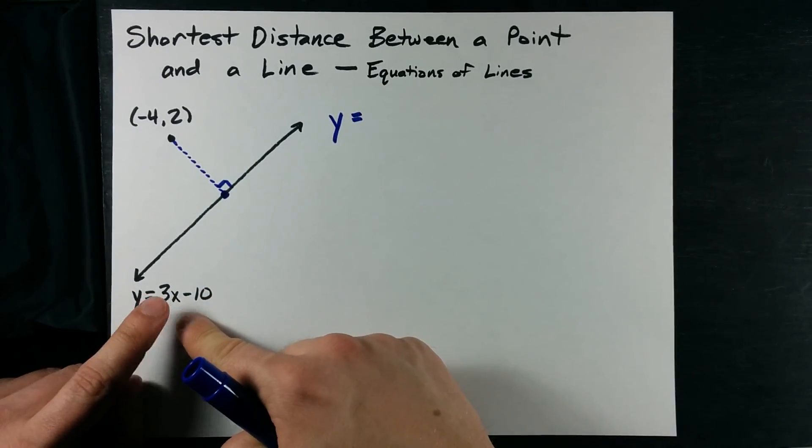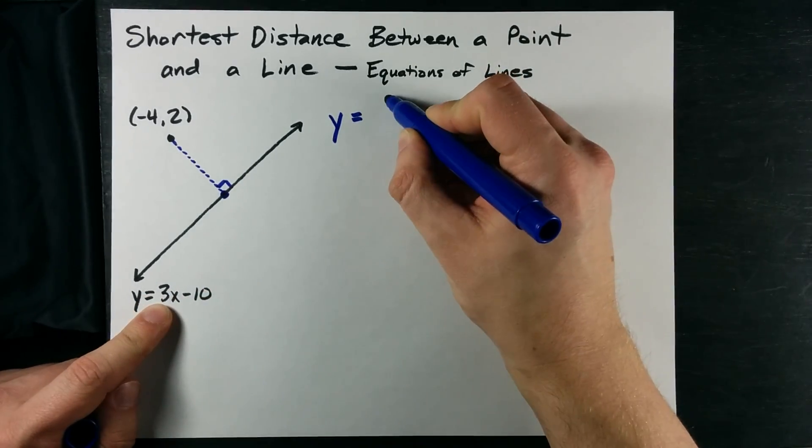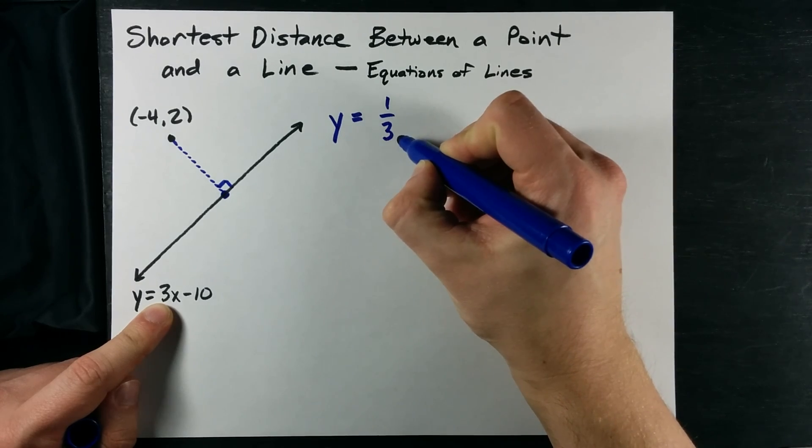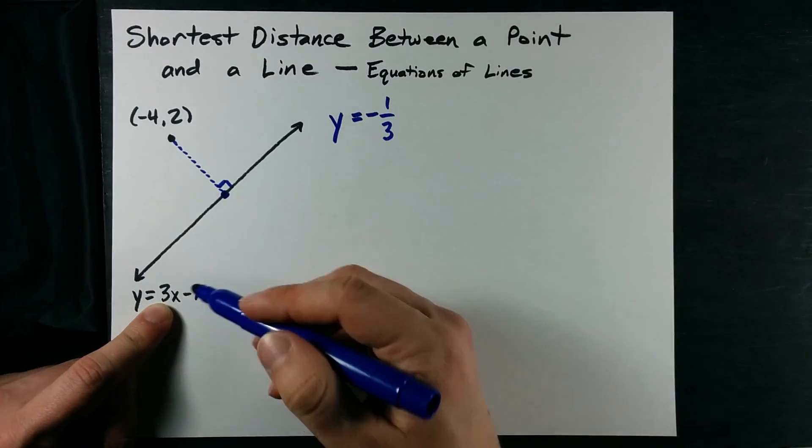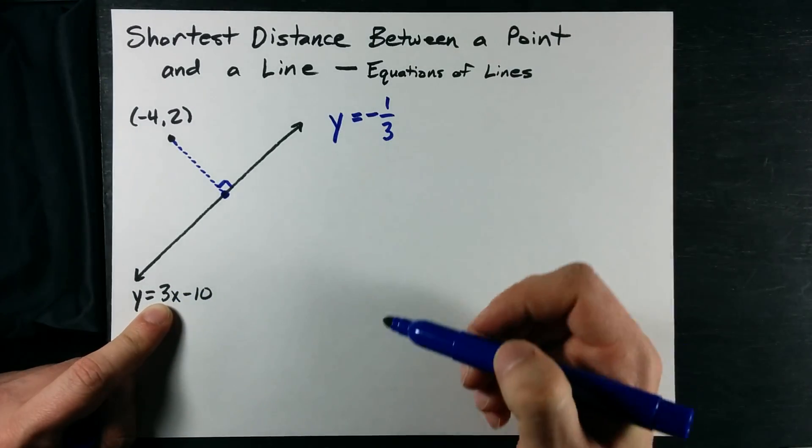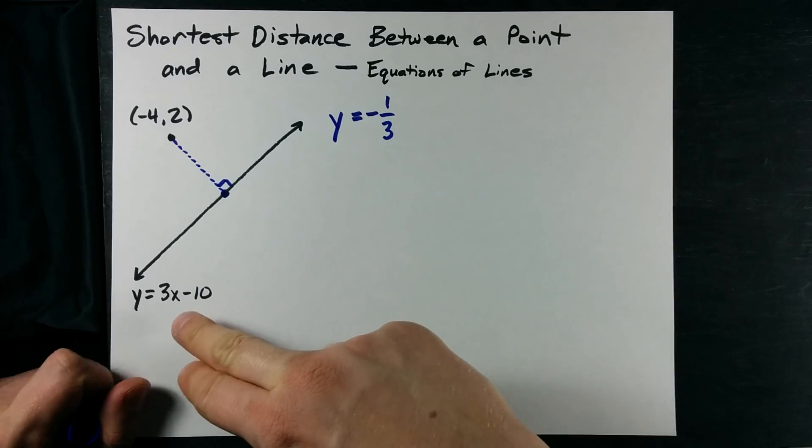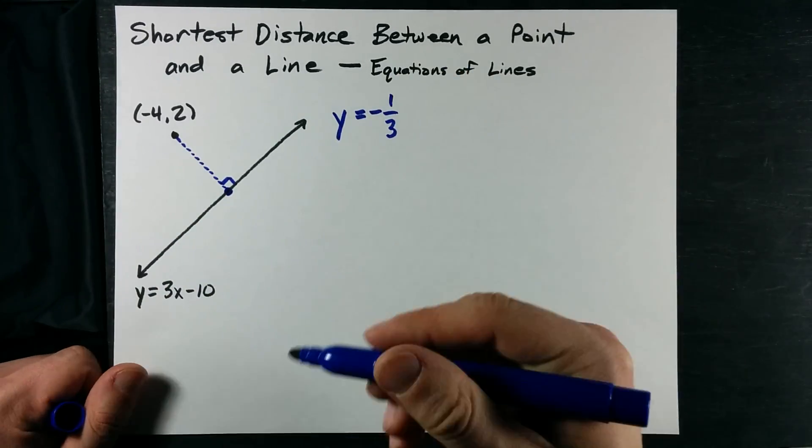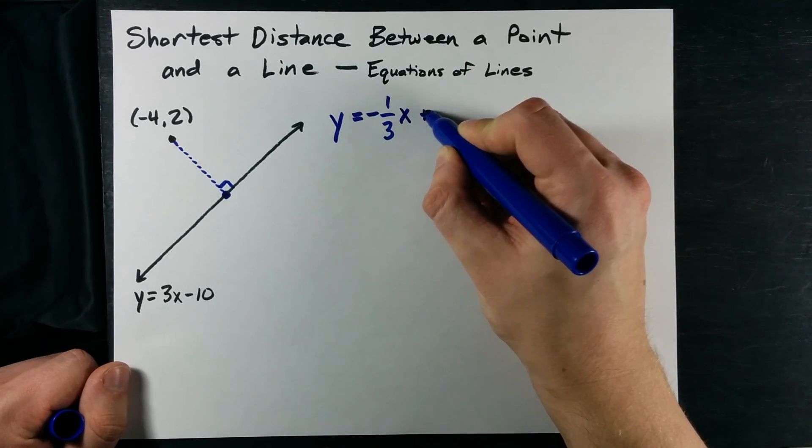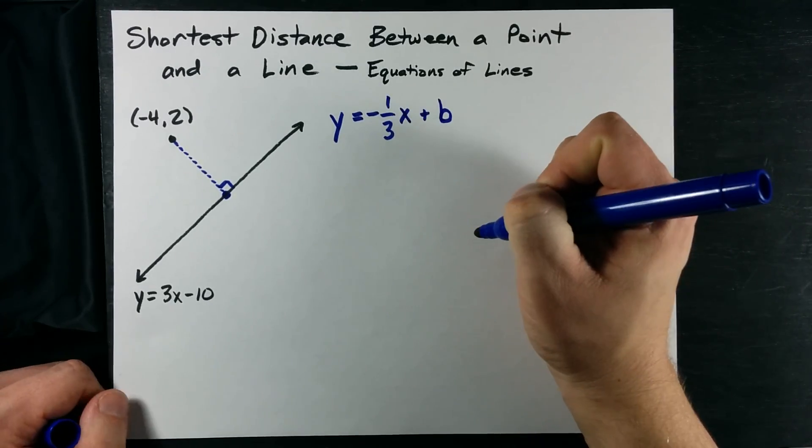The negative reciprocal is what you get when you take this slope, and you flip it, and you make that number negative, or rather, you switch the sign. A positive slope becomes a negative slope. So, this fraction 3 over 1 becomes 1 over 3, and we change the sign. y equals mx plus b, as always.